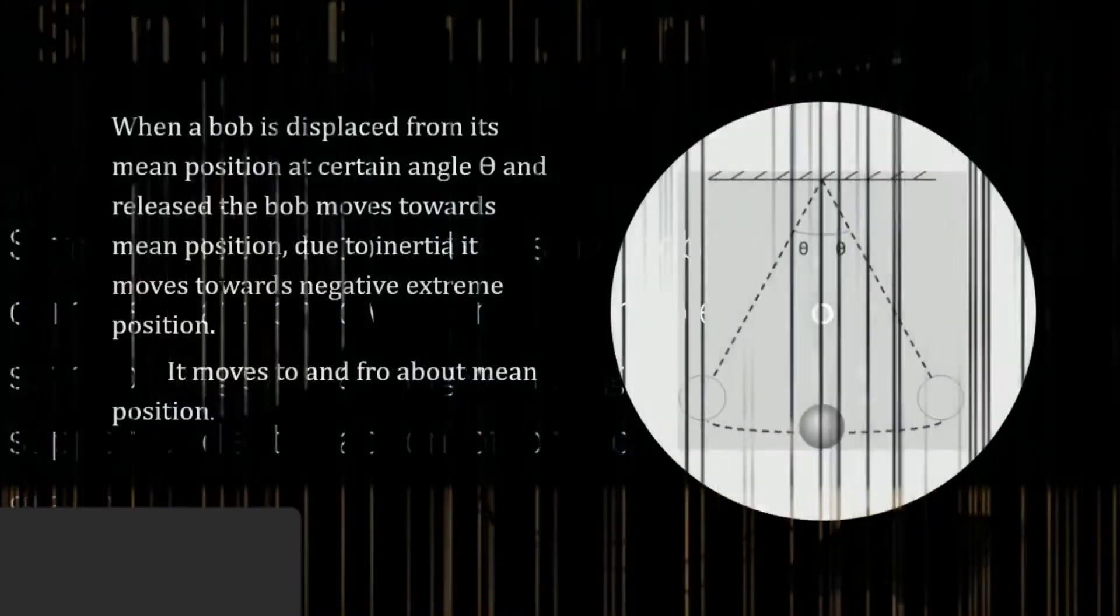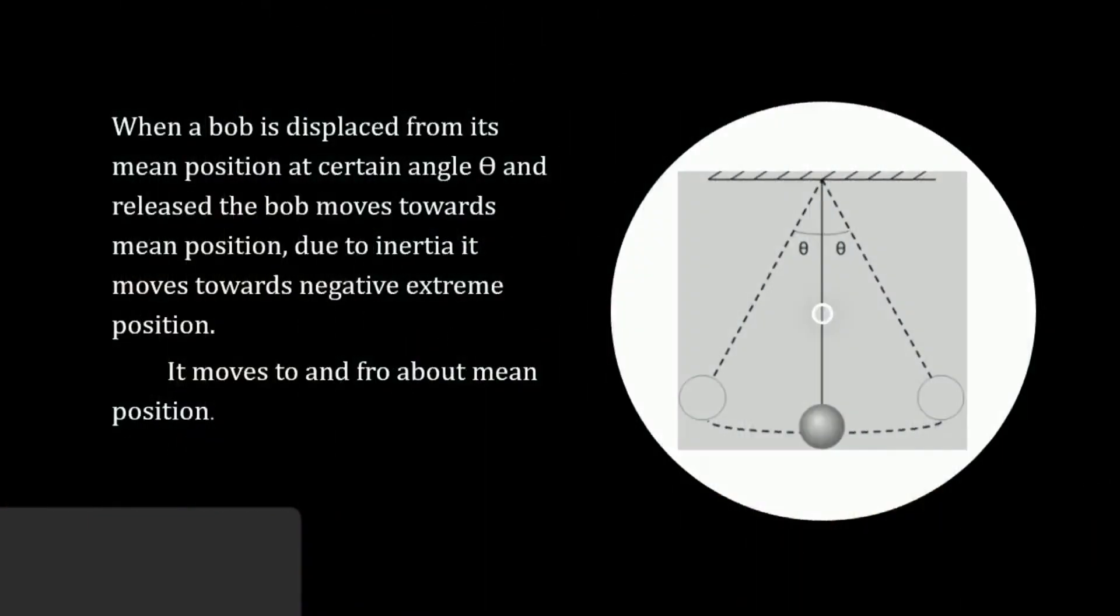When a bob is displaced from its mean position at a certain angle theta and released, the bob moves towards mean position. Due to inertia, it moves towards the negative extreme position. It moves to and fro about mean position.